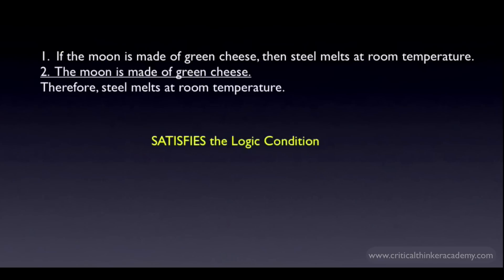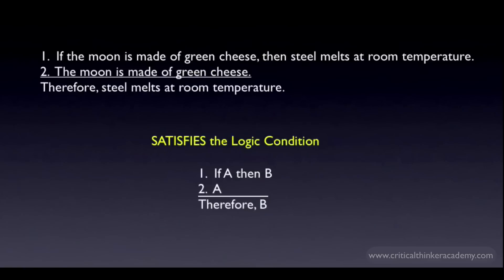Here's an example: if the moon is made of green cheese, then steel melts at room temperature; the moon is made of green cheese; therefore steel melts at room temperature. This argument satisfies the logic condition even though both premises are clearly false, because if the first premise were true and the second premise were true, then the conclusion would follow. This argument is an instance of a well-known argument form that always satisfies the logic condition: if A is true then B is true; A is true; therefore B is true. Any argument that instantiates this form will satisfy the logic condition.